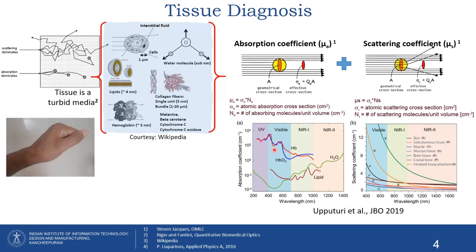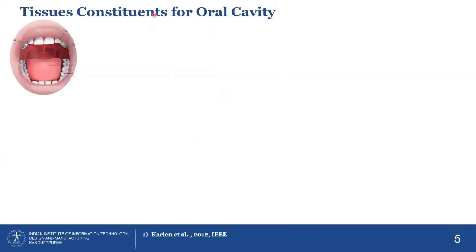For example, you can see oxygenated and deoxygenated hemoglobin here — the absorption coefficient varies as a function of wavelength. Lipid and water, also part of the tissue, show varying absorption coefficients as wavelength increases. Not only absorption, but scattering also varies with differences in wavelength.